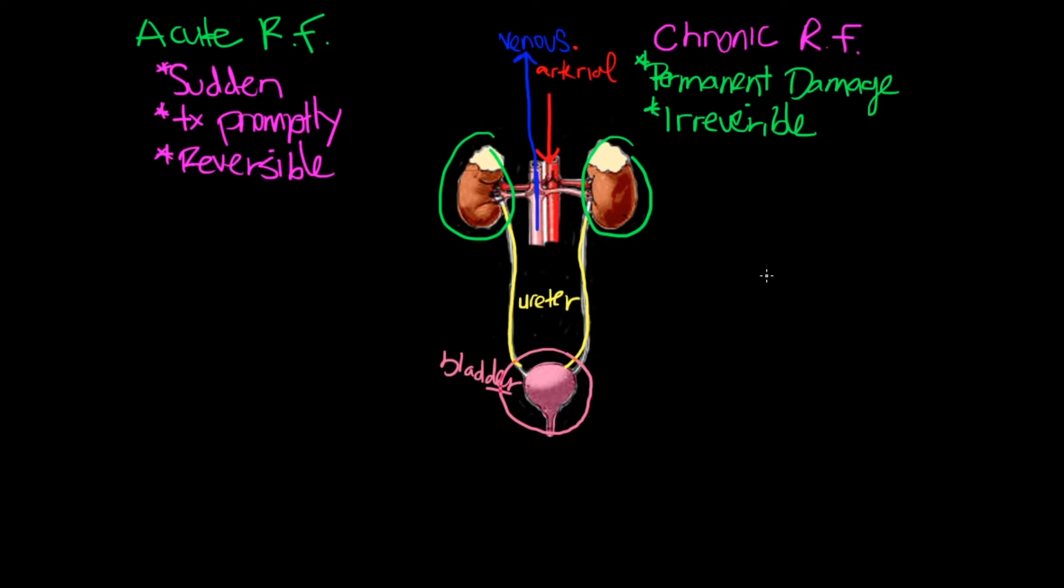So acute renal failure is a decrease. So there's three categories. I'm going to write one, you got your pre-renal. Number two, you got your intra-renal. And number three, you got your post-renal. So pre-renal is kind of like before. So it's kind of like your warning. So pre is before, it's kind of like a warning.